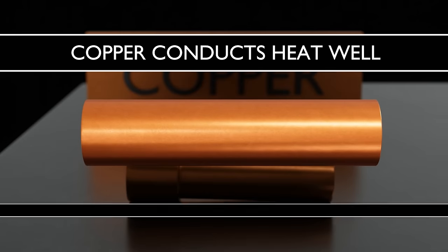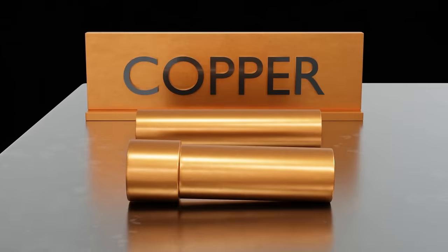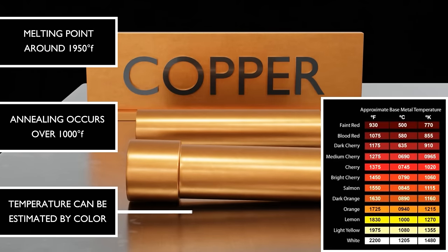Copper conducts heat very well, meaning that heat moves through it easily. It's also flexible and easy to work. You can anneal it, meaning you can heat hard copper to make it soft at over 1,000 degrees. Its temperature can also be easily estimated by color, based on the chart shown here, with dark to medium cherry red being the target color for most alloys.